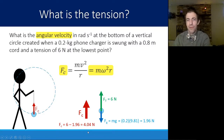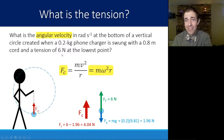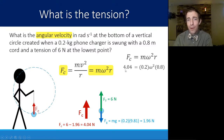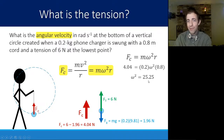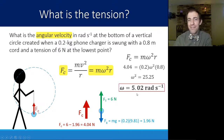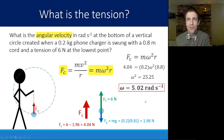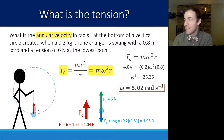Plugging into FC = mω²r: 4.04 = 0.2 × ω² × 0.8. Solving gives ω² = 4.04 / (0.2 × 0.8) = 25.25, so ω = √25.25 ≈ 5.02 radians per second. This means it travels almost once around per second, since one full revolution equals 2π ≈ 6.28 radians.